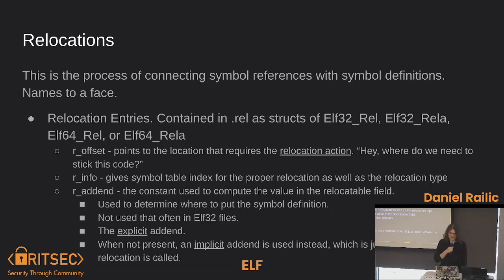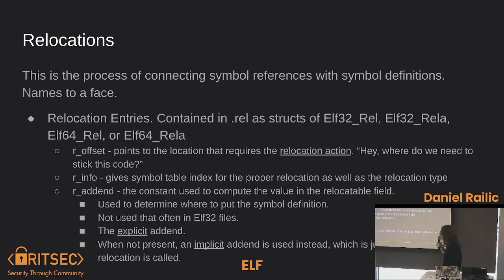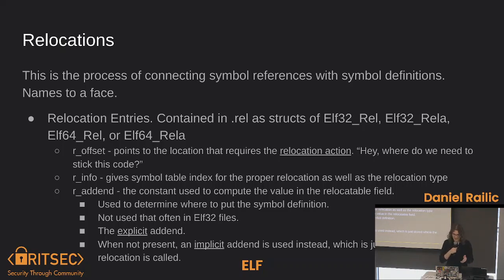Relocations are kept track of by relocation entries, and these are inside of the .rel relocation section. They come in varieties: Elf32_Rel, Elf32_Rela, Elf64_Rel, or Elf64_Rela. The 'rela' types mean there's an explicit addend. They contain two or three values: the offset, which points to the location that requires a relocation action; and the info, which gives the symbol table index for the proper relocation and relocation type — telling you where the function you need is going to get relocated from.